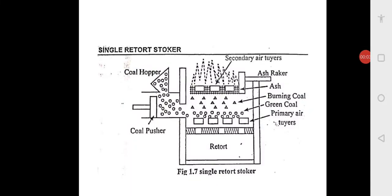Hello students, now we shall look at a single retort stoker. The sketch is very clear — you can see that instead of a grate, here they call it a retort. The principle of construction is shown in the sketch. In this stoker, fuel is burnt on a retort. Fuel is fed through a hopper — you can see on the left side there is a hopper — and is pushed onto the retort by a piston, which you can see as the coal pusher, with feeding from the bottom.